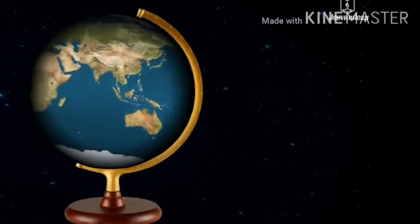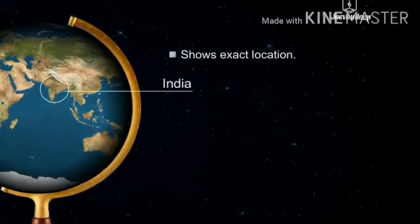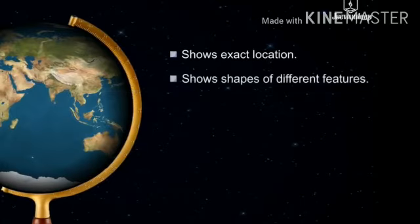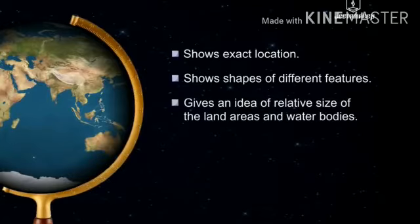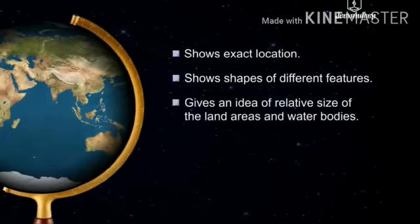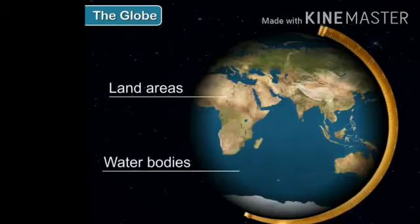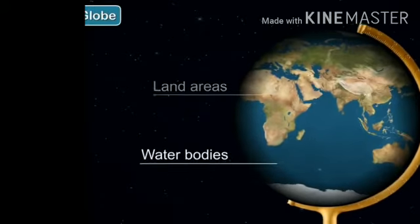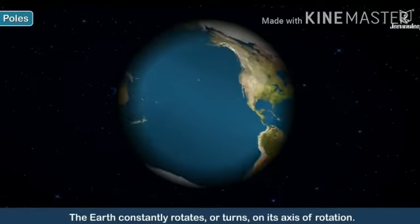A globe is a small model of the Earth. It helps us to show the exact location — for example, if you want to point out India, you can point it out on the globe. It shows the shapes of different features and gives an idea of the relative size of land areas and water bodies. The greenish-brown color represents the land areas and the blue color represents the water bodies.